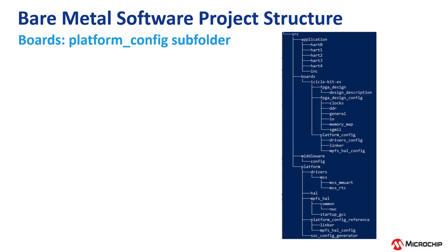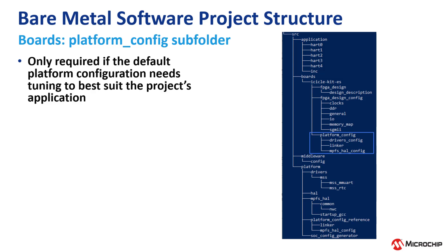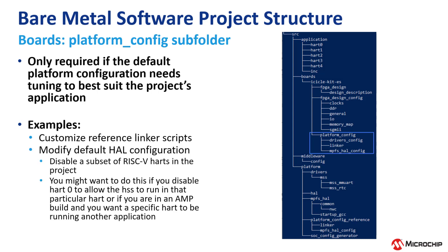Finally, we have the Platform Config subfolder. This is only required if the default platform configuration needs tuning to best suit the project's application. For example, if you want to customize a reference linker script or you want to modify the default hardware configuration, such as disabling a subset of the RISC-V harts in the project. If you do this, the disabled harts will go to wait for interrupt mode when they are unused. You might want to do this if you disable hart 0 to allow the HSS to run in that particular hart, or if you are in an AMP build and you want a specific hart to be running another application.